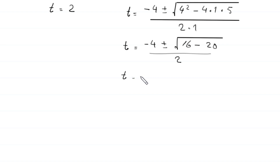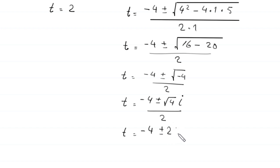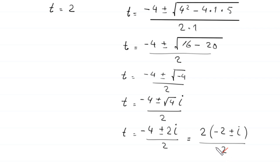We get t equals negative 4 plus or minus the square root of negative 4, divided by 2. The square root of negative 4 becomes root 4 times i, which is 2i. From the numerator we factor out 2, leaving negative 2 plus or minus i, divided by 2. The 2s cancel, and we get t equals negative 2 plus or minus i.